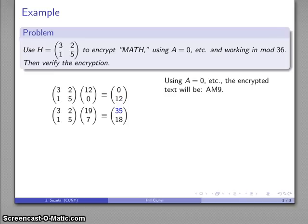So 0 is A, 12 is M, 35 is 9 the digit, and 18 is S. And so my encrypted form of MATH is going to be AM9S.